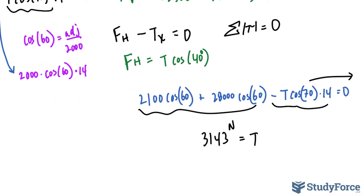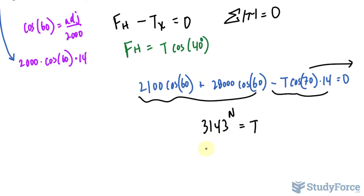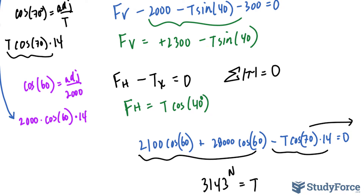Taking into account significant figures, this can be rounded to 3,140 newtons. Substituting this value of T into the equations for F sub V and F sub H, those two values can now be found.